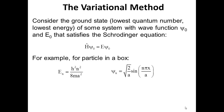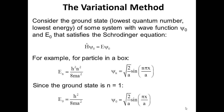For a particle in a box, since we have derived the analytical expressions for the energy and for the wave function, we just plug in n=1, the lowest energy state possible, and we can easily write down what the ground state energy and the ground state wave function look like for this particular case.